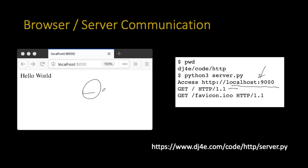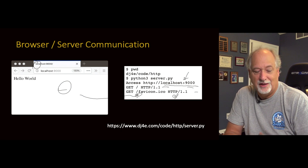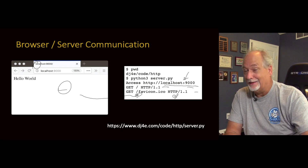There's a second GET request you didn't even ask for. The browser is built to ask for a URL called favicon.ico so it can make an icon that ends up in the browser tab. You didn't ask the browser to do this, but it's a thing browsers do. You'll see this in your debug logs when you're building stuff. After that, it waits again, and you can hit refresh or open a different browser and see more GET requests.